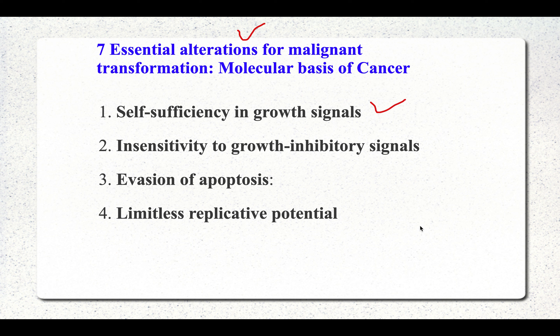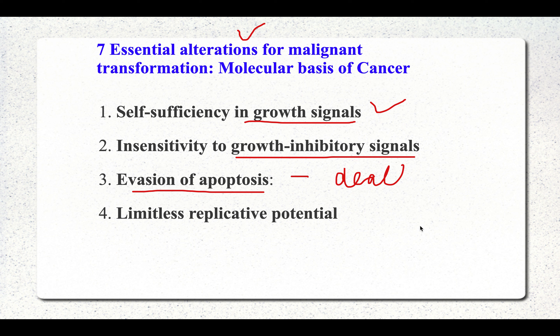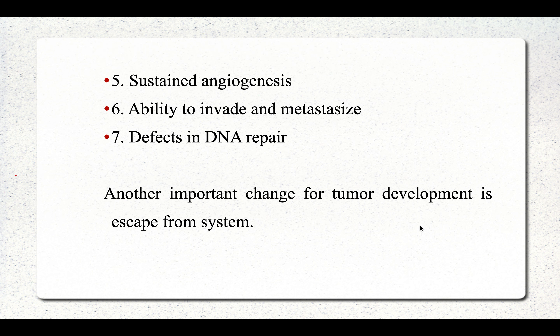The first alteration is self-sufficiency in growth signals — the cells become self-sufficient to get growth signals. Second is insensitivity to growth inhibitory signals. Third is evasion of apoptosis, that is evasion of cell death. Fourth is limitless replicative potential. Fifth is sustained angiogenesis — the tumor must obtain a blood supply.